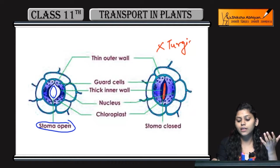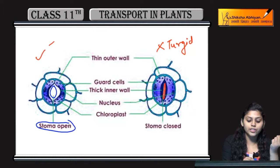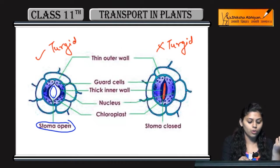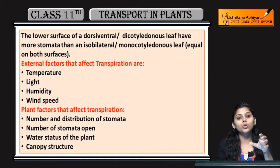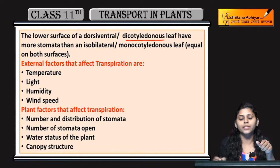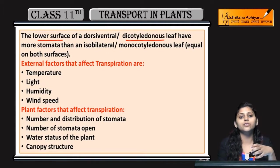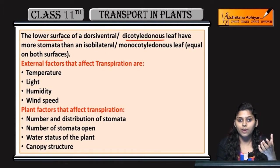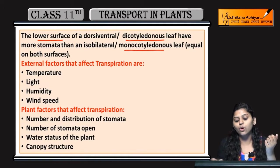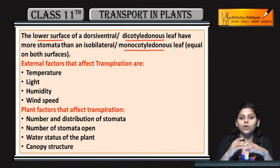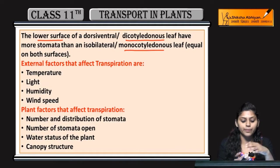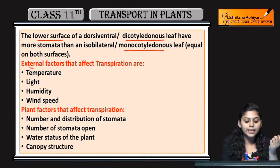Jab guard cells turgidity gain karega to stomata open hoga, aur stomata close hoga jab turgidity kam hogi. Ab jo lower dicots mein hota hai — jo dicot leaves hain, unke lower surface pe zyada stomata hote hain, whereas monocots mein equal number of stomata hote hain upper or lower surface of leaves mein.